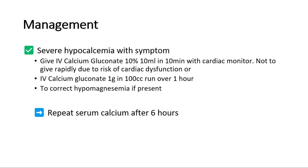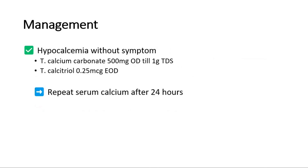Also, correct hypomagnesemia if present, then repeat serum calcium after 6 hours. Second, for management of hypocalcemia without symptoms, give tablet calcium carbonate 500 mg OD up to 1 gram TDS and tablet calcitriol 0.25 mcg OD. Repeat serum calcium after 24 hours.